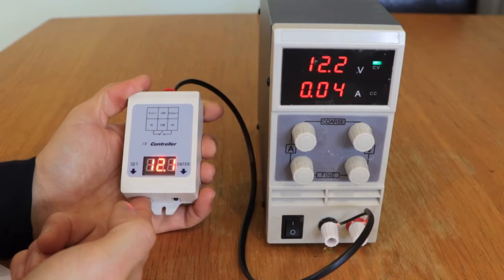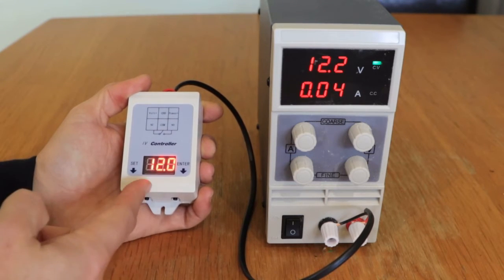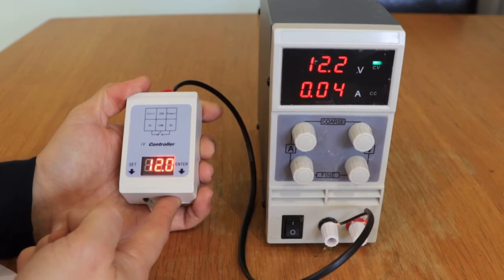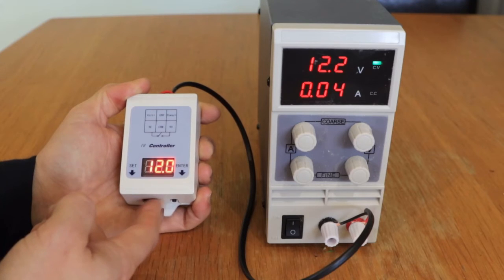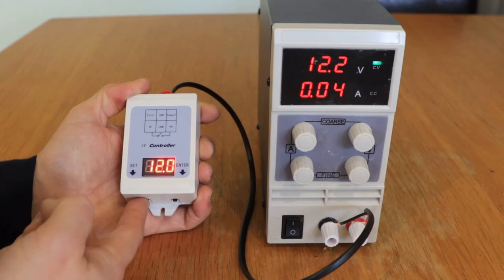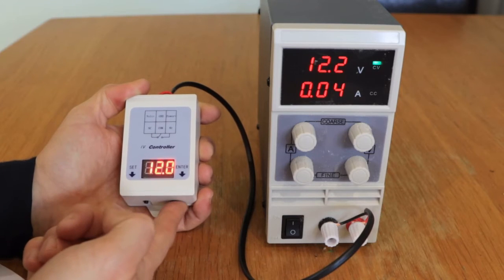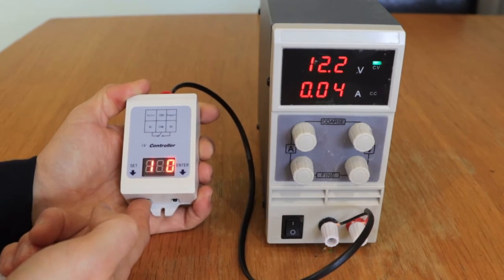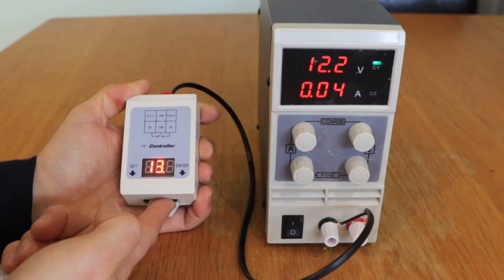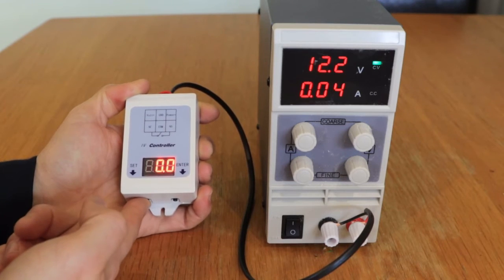So we're going to hold down set. There we are. Press that for a second and now I can change these values. So this is V1. I want this set to say 13 volts. So enter just changes the number. Press set, go to the next number. Enter, change that to 13. Set. And then I don't want to change that, so I press set again.